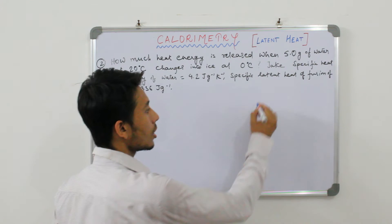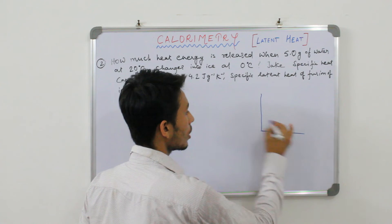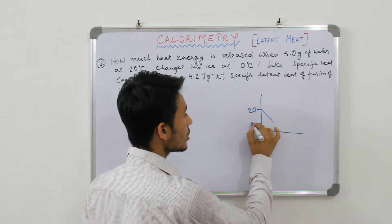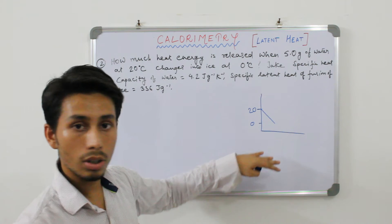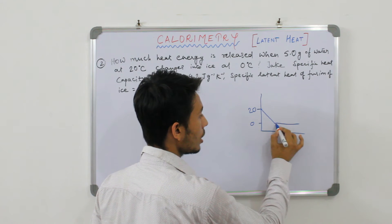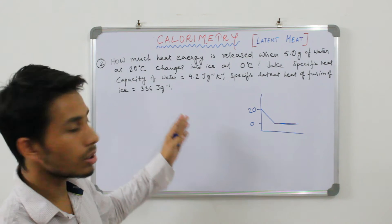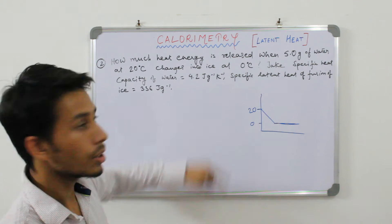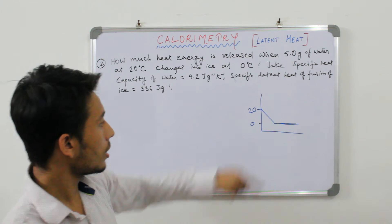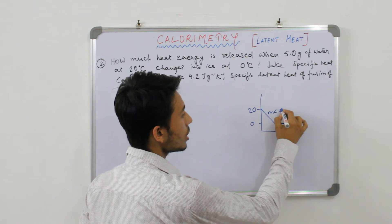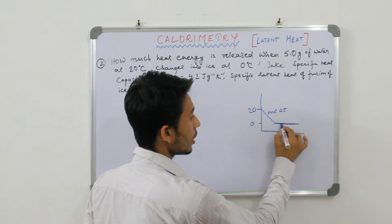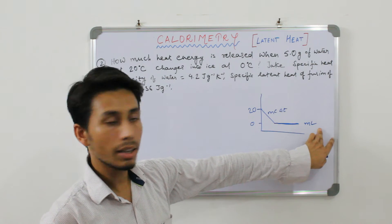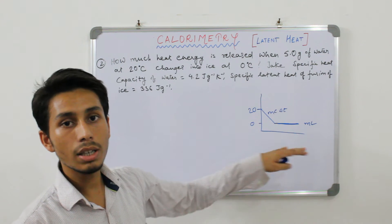If you understand this in phases: initially water is at 20 degrees centigrade, its temperature drops to 0 degrees centigrade, and then it releases energy to convert into ice, giving 0 degrees centigrade of ice. The problem is considered in two parts — the sloped part involves change in temperature, and the flat line indicates change of state. Whenever there is a change of state, we use latent heat (ML); whenever there is a change in temperature, we use MC delta T.